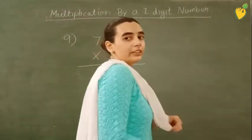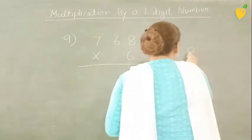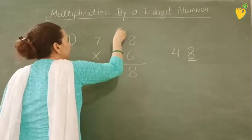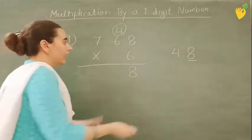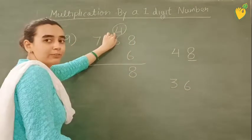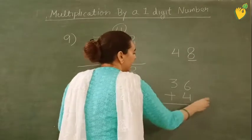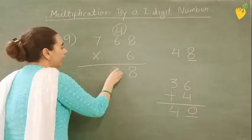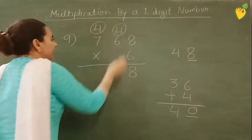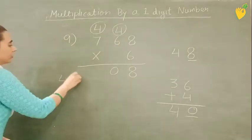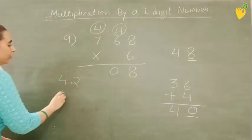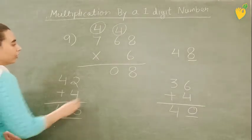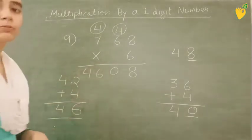Now 6 8's are 48. Again this 8 you will write here. And this 4 will be carry. Now 6 6's are 36. But here 4 you have to take carry also. So 36 plus 4 is 40. And this 0 you will write here. And again this 4 will be carry. Now 6 7's are 42. And this 42 here you will add 4 because of this carry. So 4 plus 4 is 6. And this 4 plus 0 is 4. So you will write 46 here. So your answer is 4608.